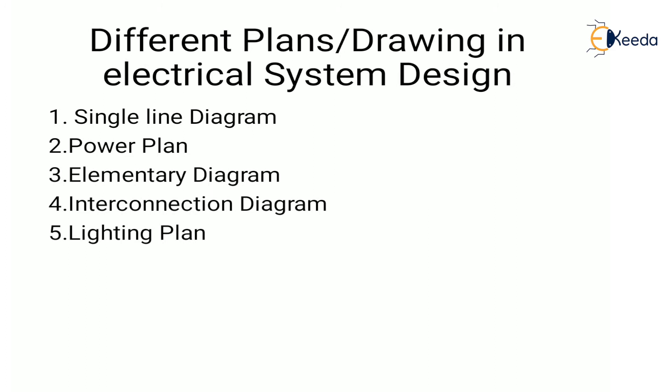Now different drawings and plans in electrical system design. The first one is single line diagram, second is power plan, next is elementary diagram, fourth one is interconnection diagram, and the last lighting plan. So let's see one by one.